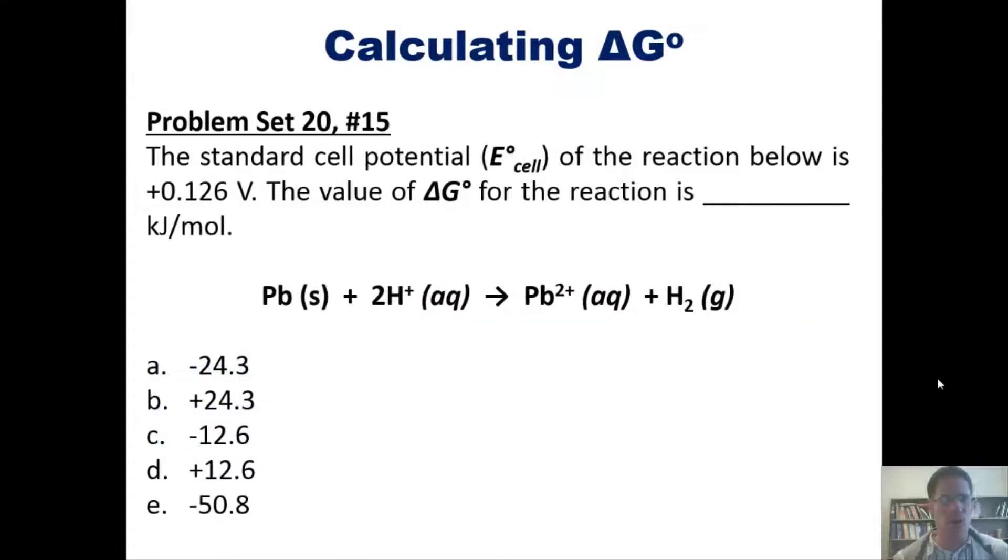Let's take a look at a problem. The standard cell potential of the reaction shown here is plus 0.126 volts. The value of Delta G for this reaction is how many kilojoules per mole? I'm not going to do this for you here, but if you wish I'll post a link to a separate video here in which I show you how to do it on the board.